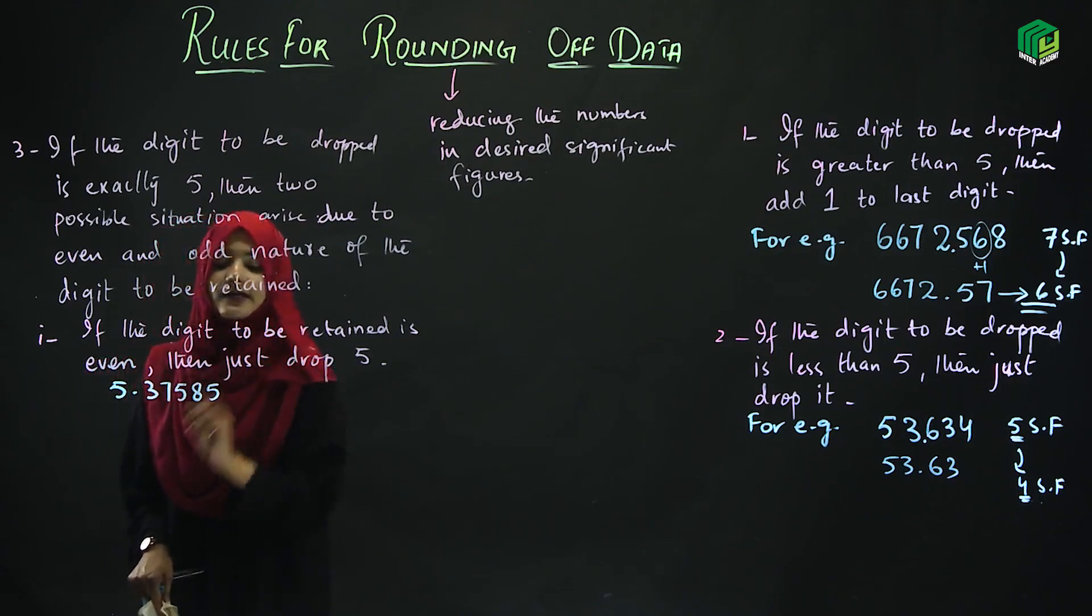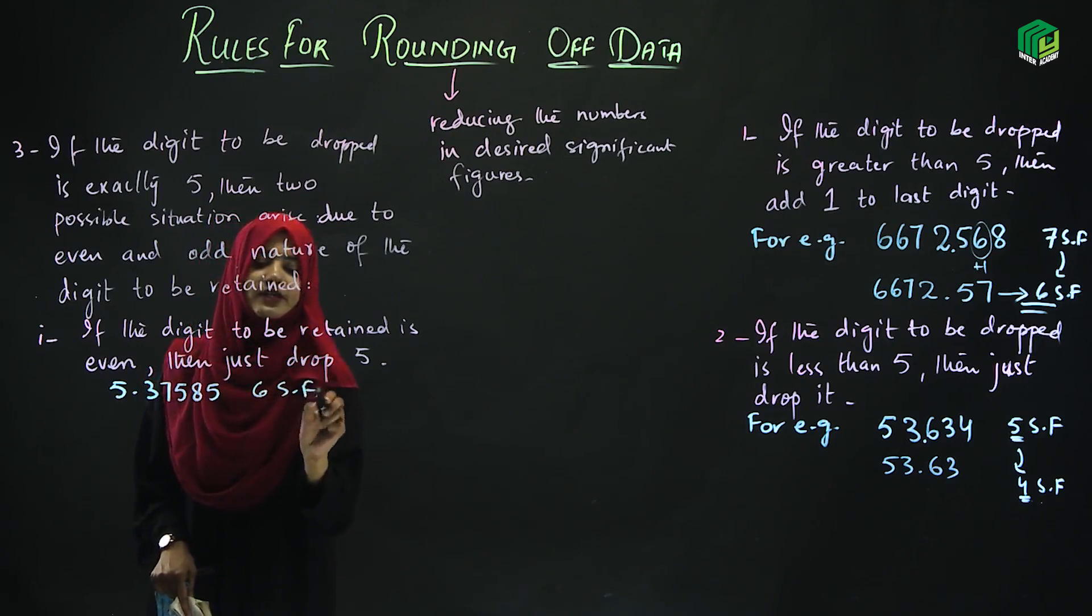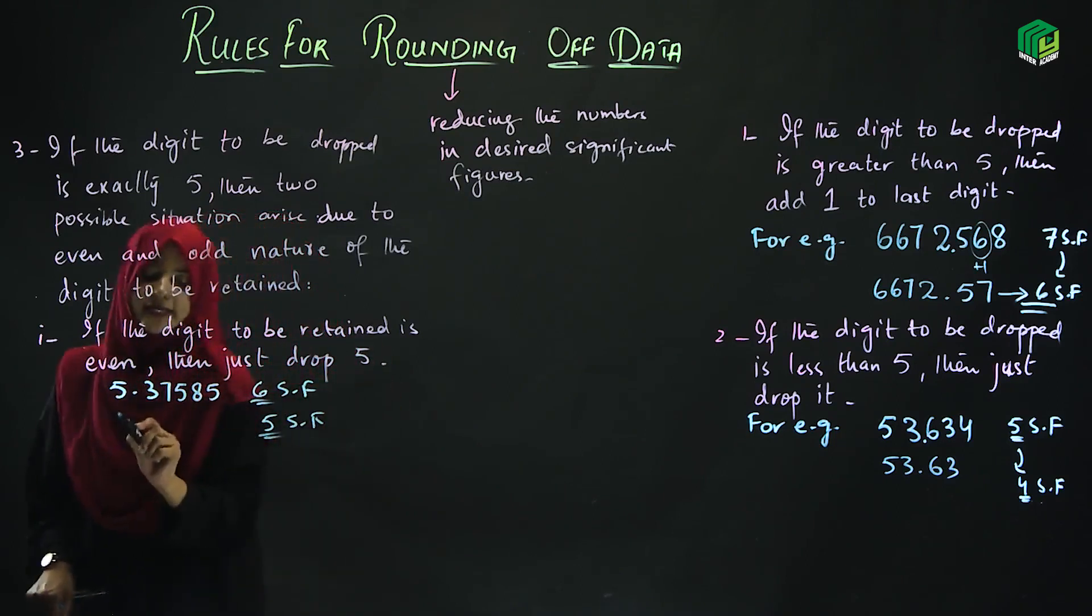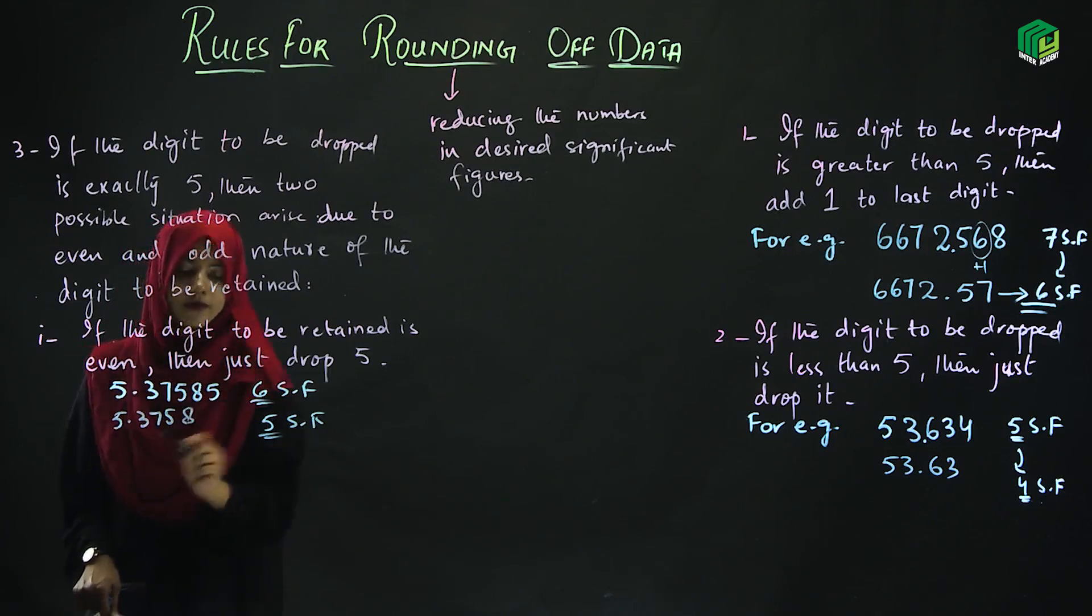So if we round off this to 5 significant figures, we will simply drop the 5. The even number will remain as it is. If the retained number is even and the digit to be dropped is 5, then just drop it.